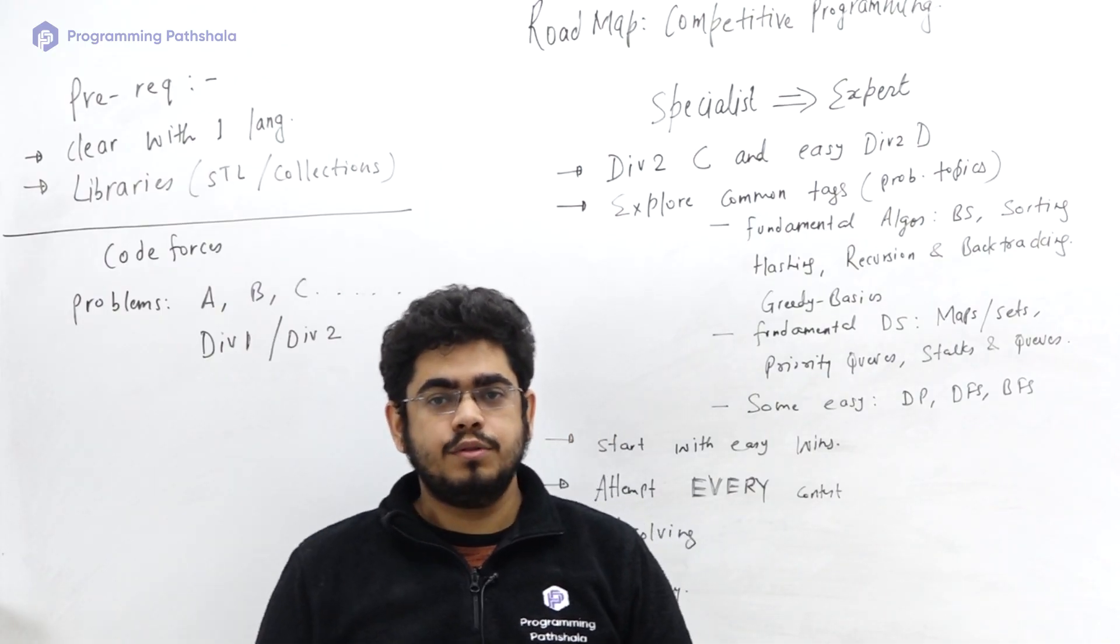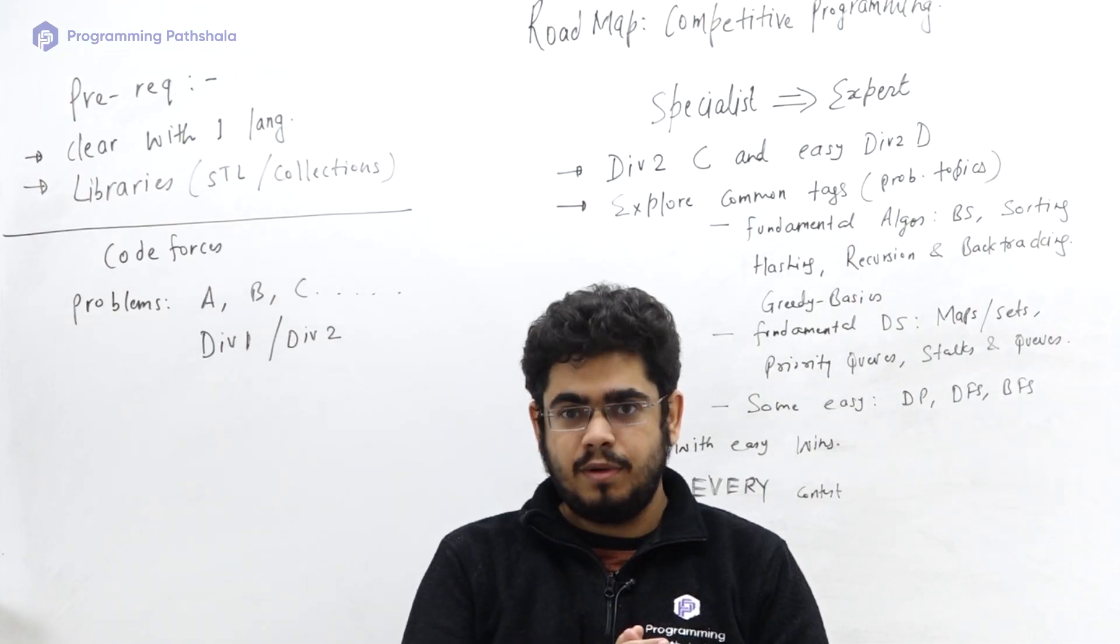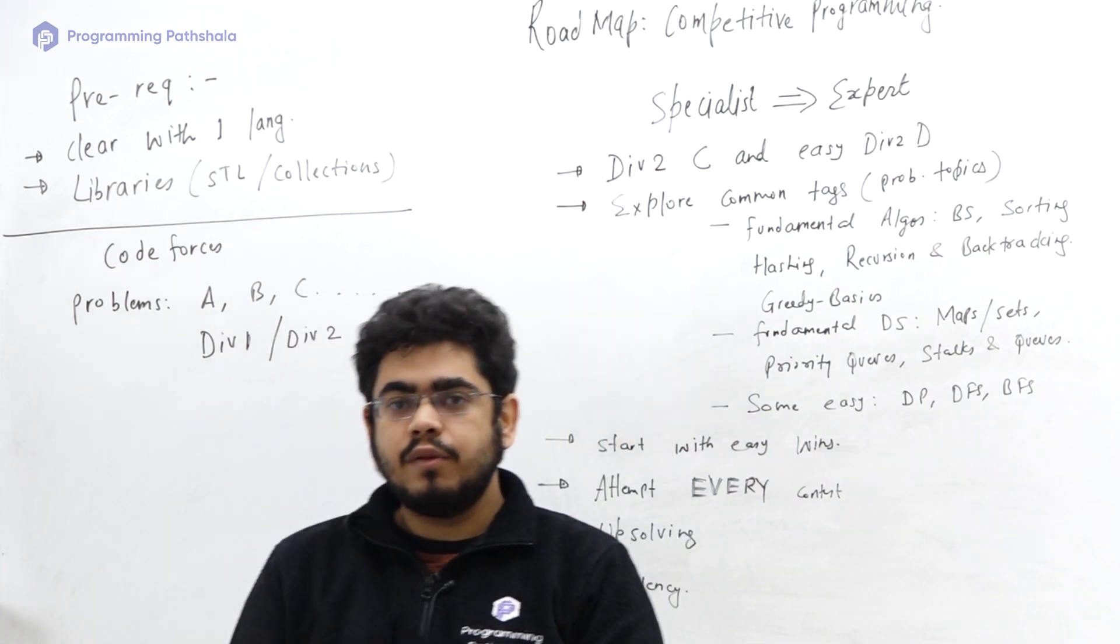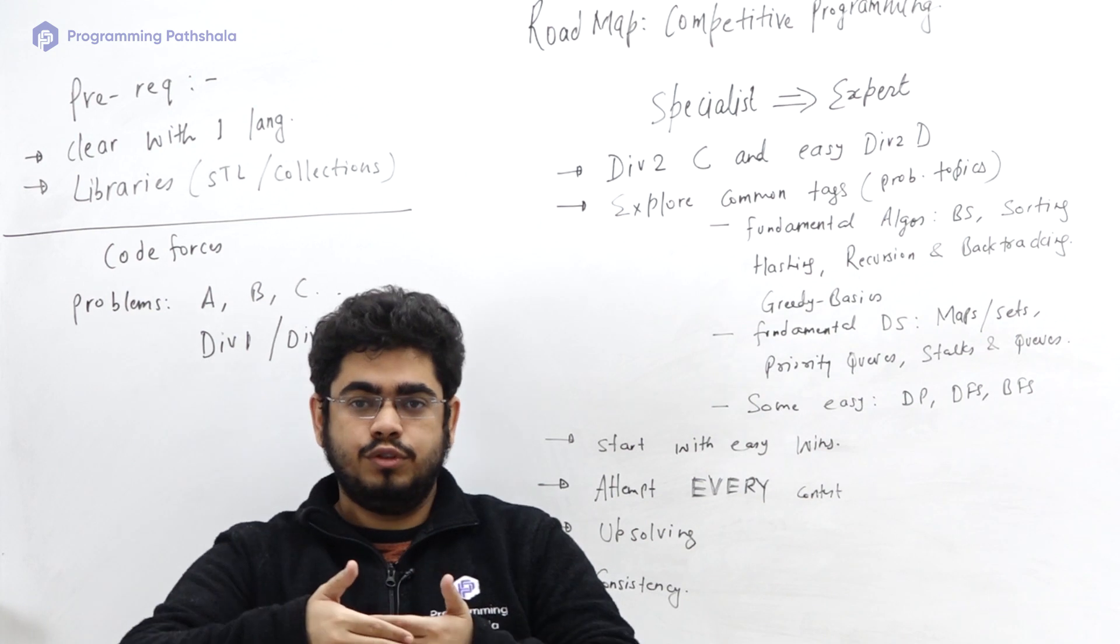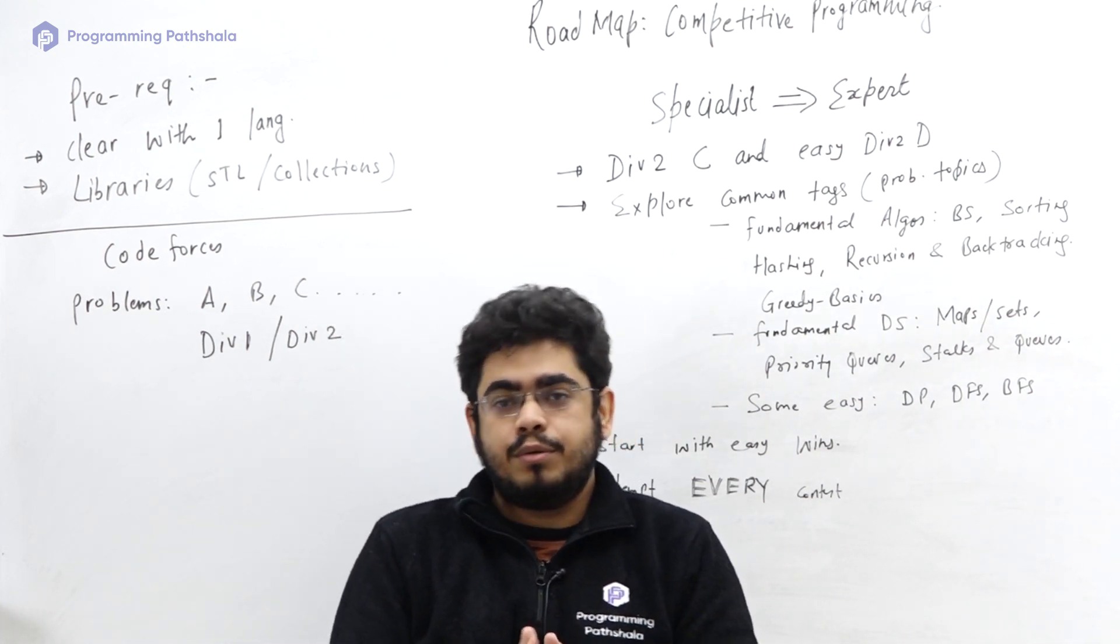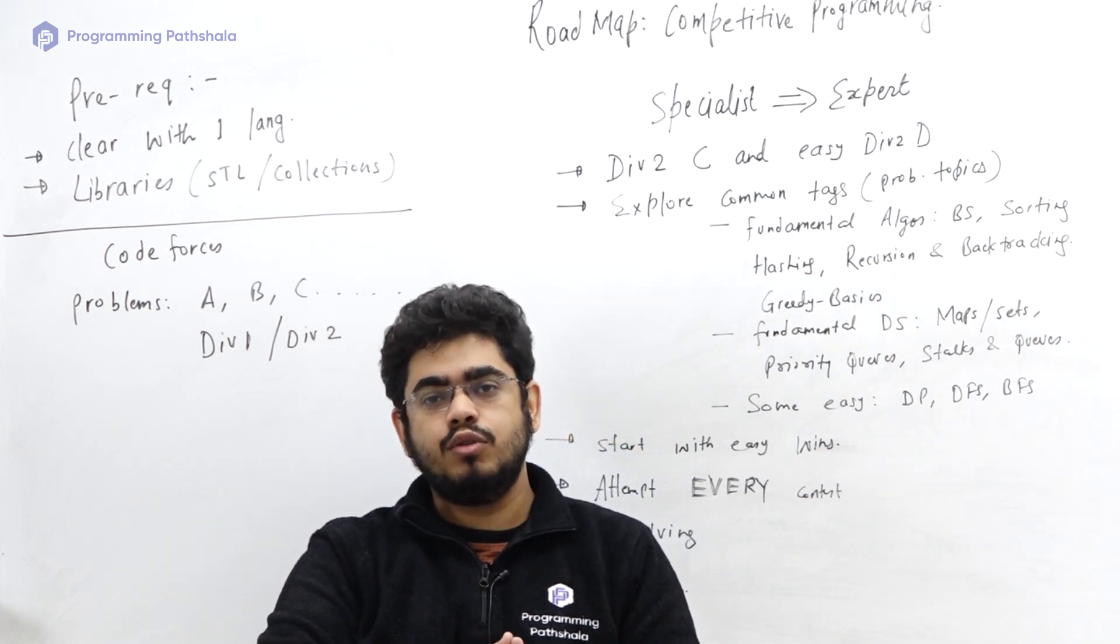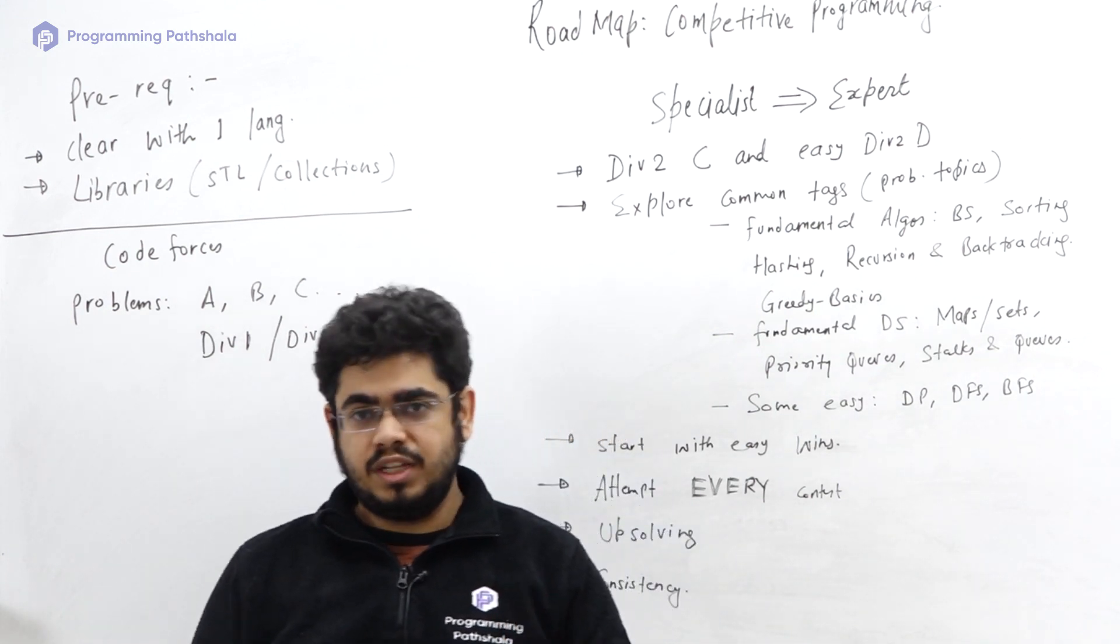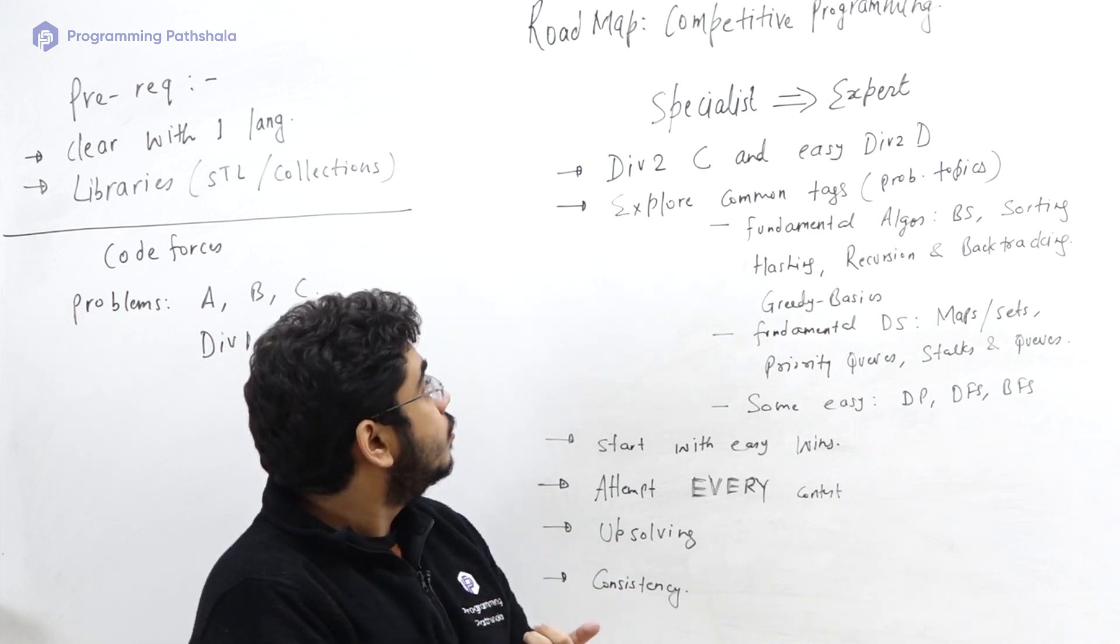Hi everyone, welcome to the second part of roadmap to competitive programming. In this part we are going to cover the next portion. If you are at the level of specialist, how do you go beyond that and reach the level of expert, which is around 1600 rating?